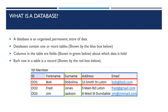Each row in a table is a record — that is all the details for one entry in that table. Outlined in red, you can see the record for Bob Dobolina, which includes his ID, forename, surname, address and email. Below it we have two further records for Fred Jones and for Jim Jackson.